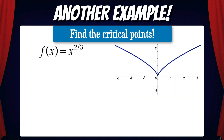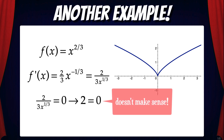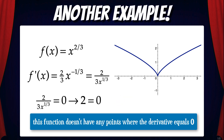Let's do another example. Find the critical points of f(x) = x^(2/3). We need to determine where the derivative is zero or does not exist. Taking the derivative: f'(x) = (2/3)x^(-1/3), which is the same as 2 divided by 3x^(1/3). If we set this equal to zero and try to solve for x, something weird happens — we get 2 = 0, which doesn't make any sense. That means this function doesn't have any points where the derivative equals zero.